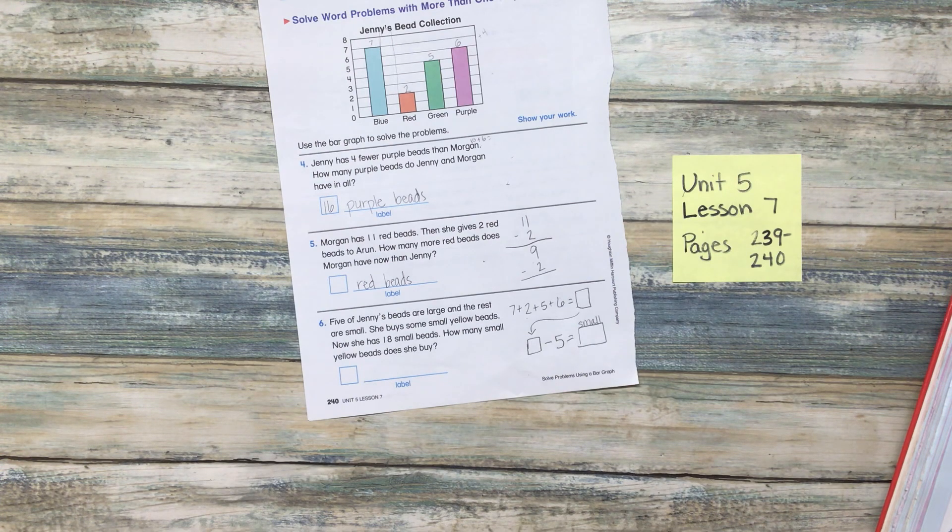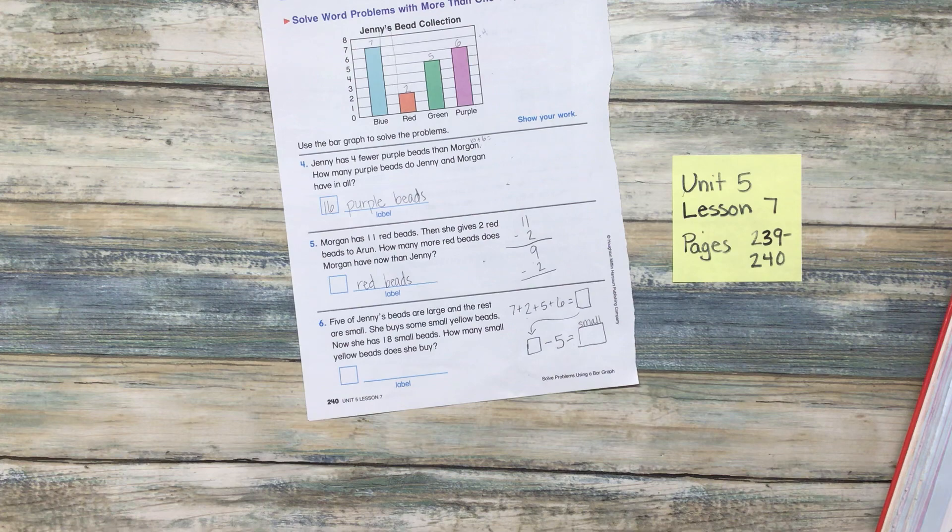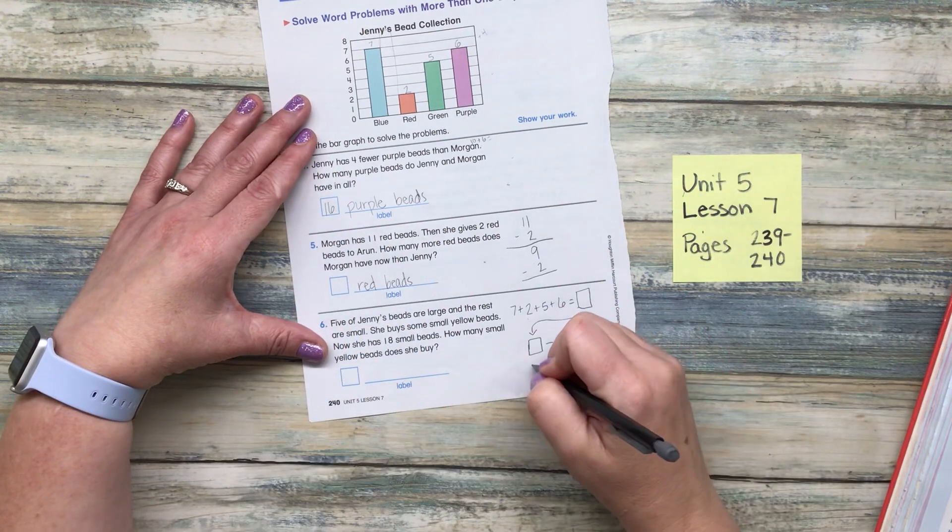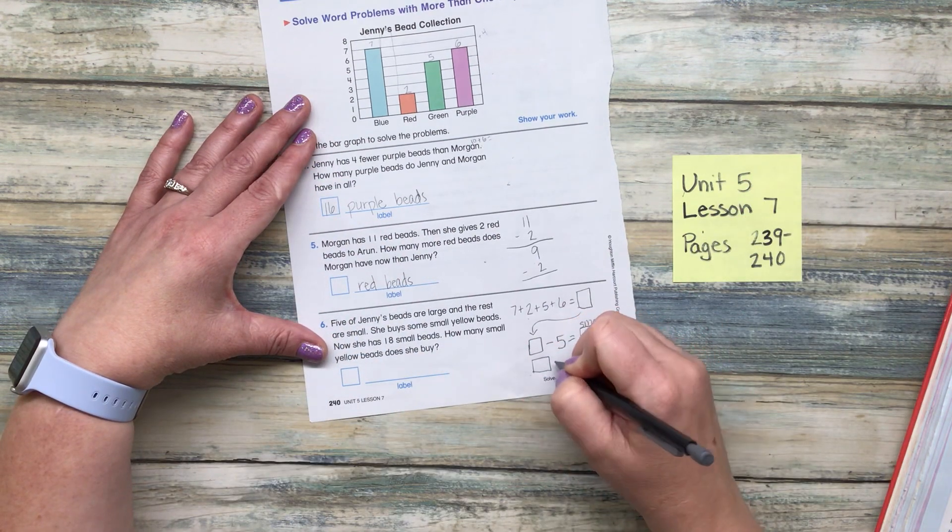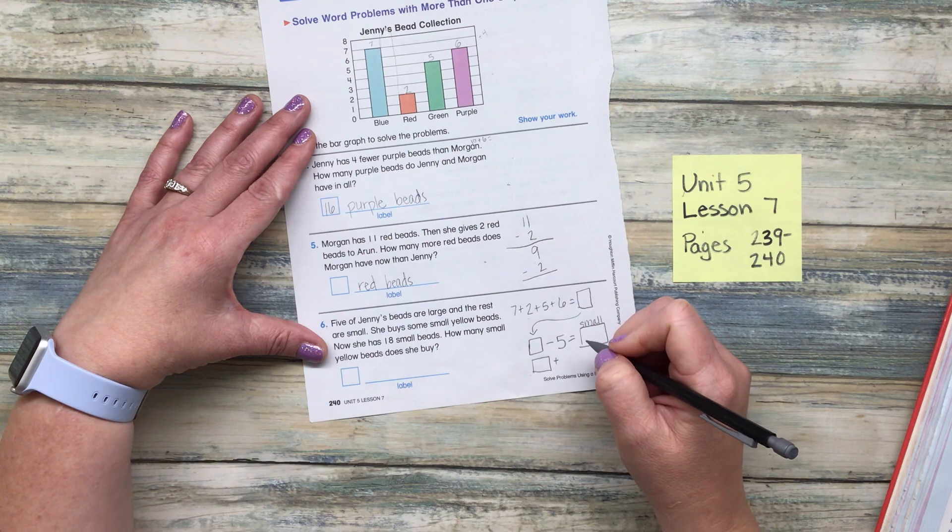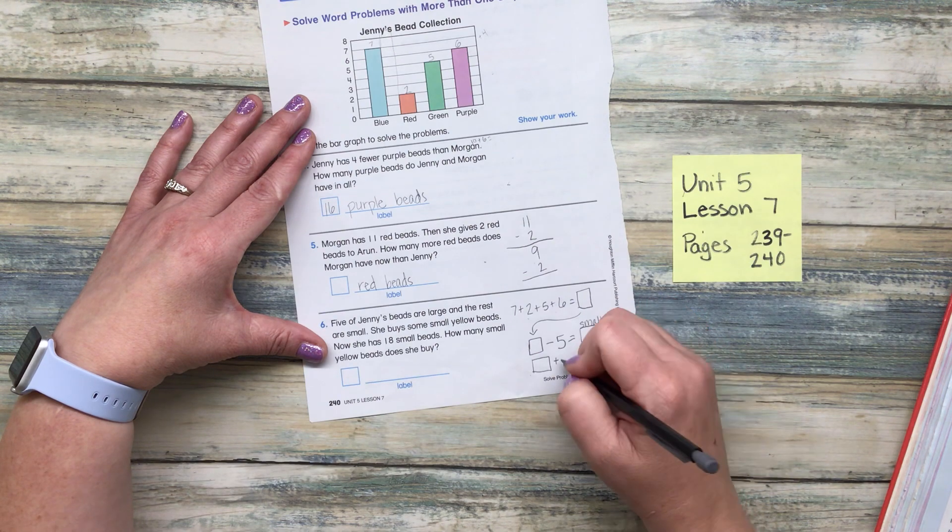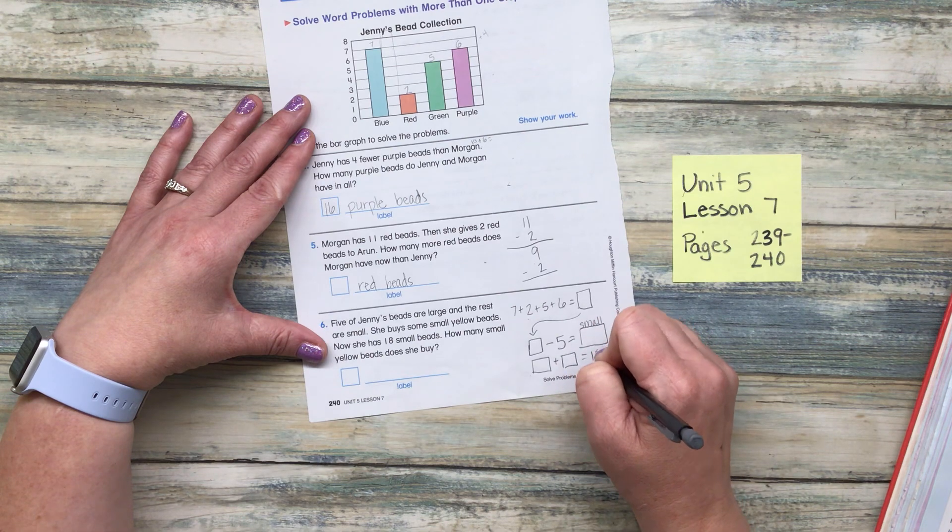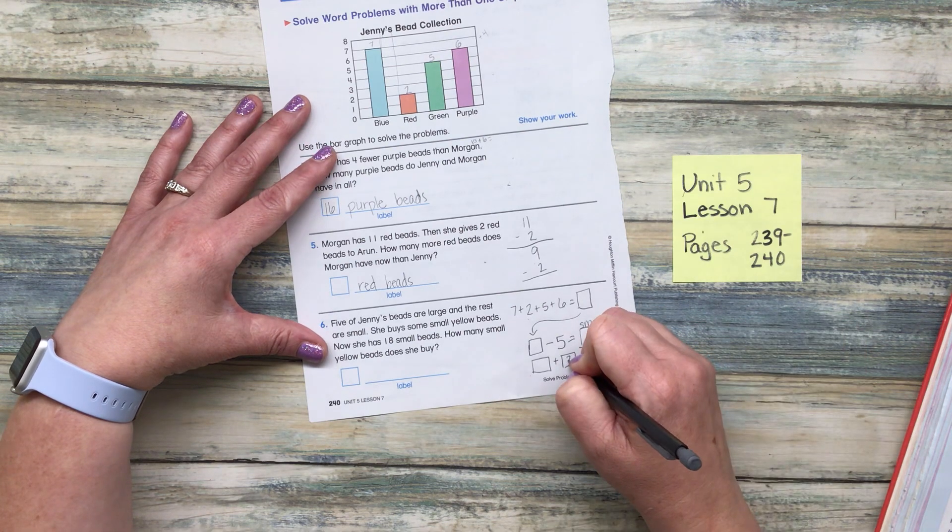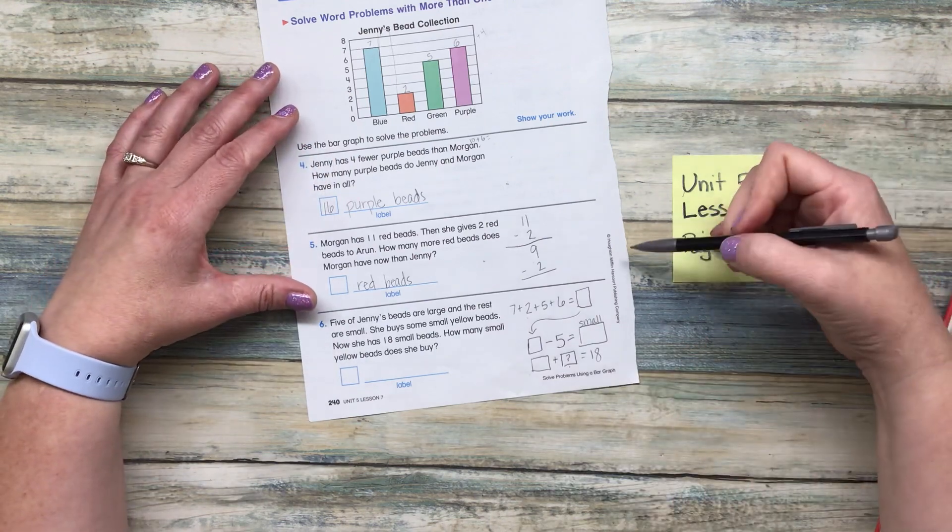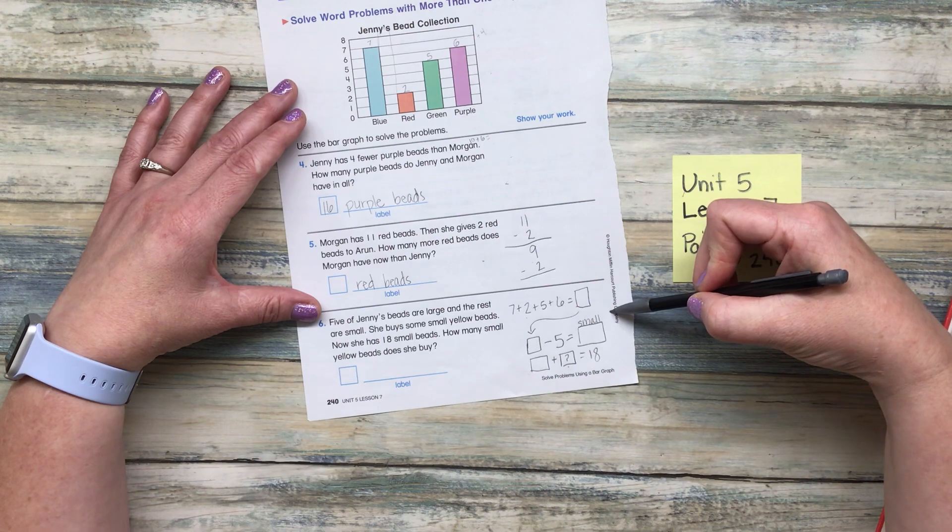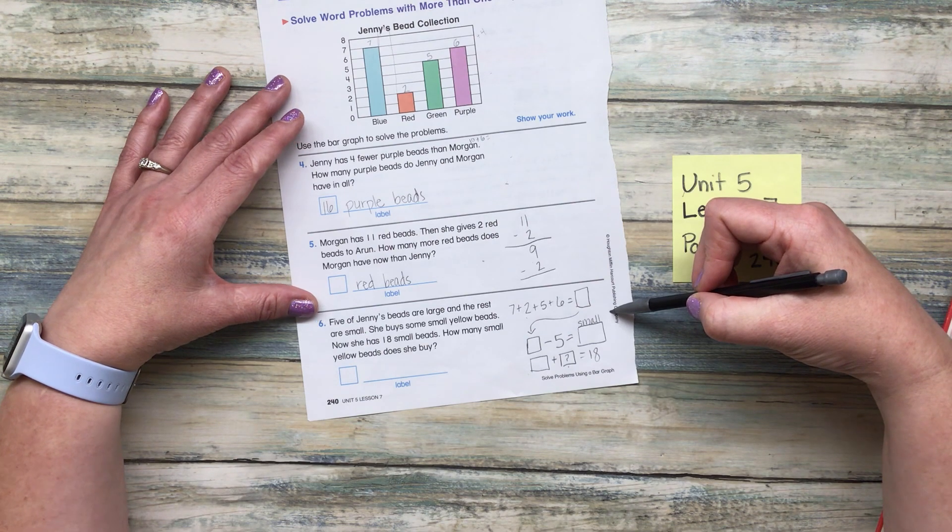Now she has 18 small beads. How many small beads does she buy? So then we're going to take this small plus the mystery and that's going to equal 18. That's a lot to think about. We can work through this together if you need to. This is more than two steps. This is three steps.